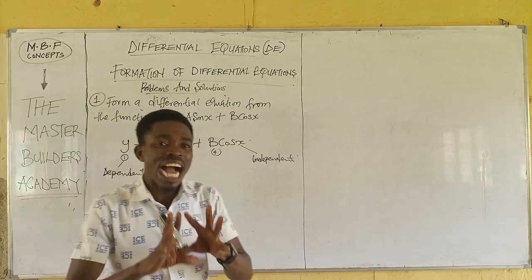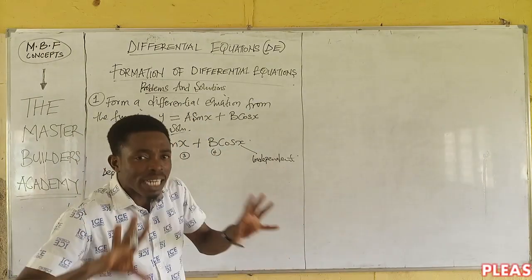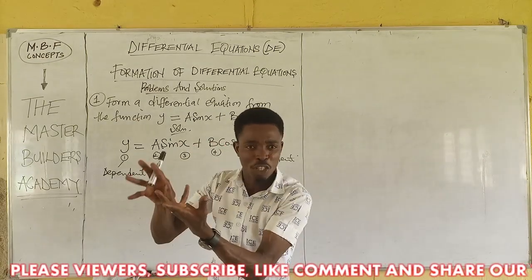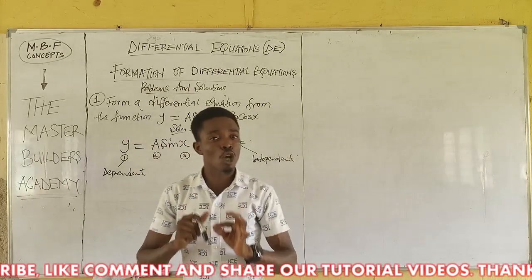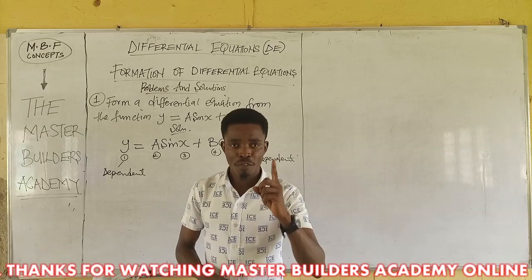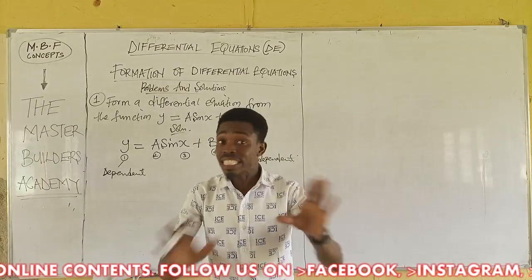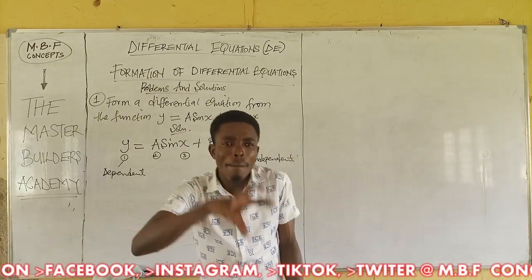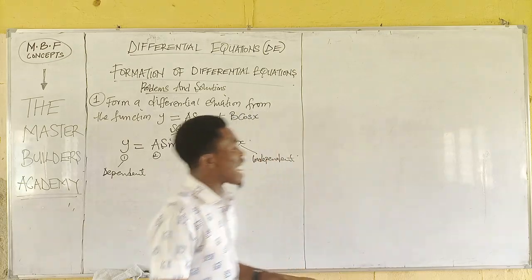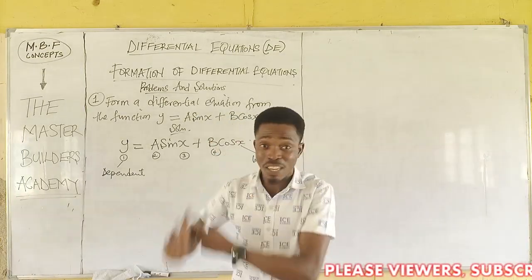What do we do when we have two arbitrary constants, or one, or three? Listen carefully — I want to give you a condition that will help you master solving problems in differential equations. The first thing you must do is to take note of the number of arbitrary constants present. If you have one arbitrary constant, you will have a first order differential equation as your answer.